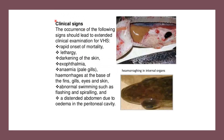Clinical signs of VHS include rapid onset of mortality, lethargy, darkening of the skin, exophthalmia, and anemia or pale gills. There are also hemorrhages at the base of the gills, the eyes, and skin, abnormal swimming, and a distended abdomen due to edema in the peritoneal cavity.